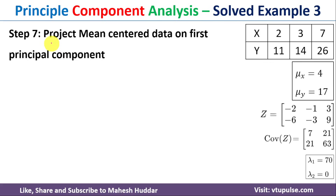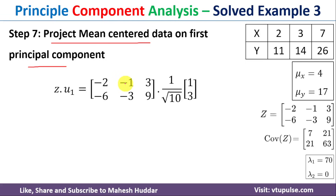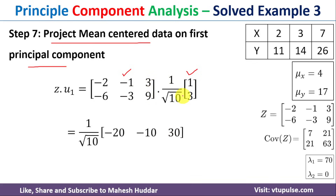Next we project the mean-centered data onto the first principal component by computing the dot product of Z and u₁. Using the Z matrix and u₁, the result Z·u₁ = (1/√10) × [−20, −10, 30].